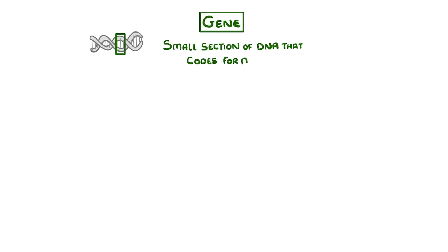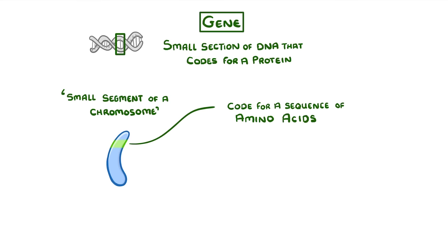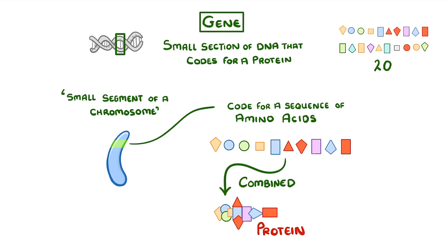Now a gene is a small section of DNA that codes for a particular type of protein, so you can think of it as being a small segment of a chromosome. This section of DNA is basically a code for a particular sequence of amino acids. And when these amino acids are combined in this particular sequence, they form a protein. There are only 20 different types of amino acids, but because they can be combined in so many different combinations, they can actually make thousands of different proteins.